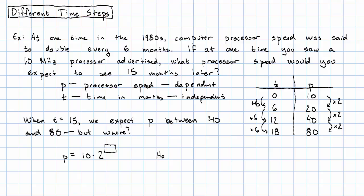How many times does P double in T months? It doubles once in six months, twice in 12 months, and three times in 18 months. How many times does it double? T over six.